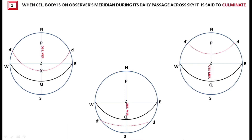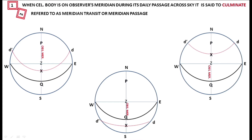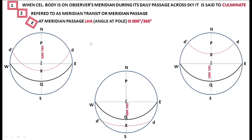When it comes to the body on its daily passage and it comes on your meridian, it is said to be culminating. This is what we refer to as the meridian transit or meridian passage. When the body comes on a meridian, we call it meridian passage or meridian transit. At meridian passage, LHA is 0, 180, or 360.